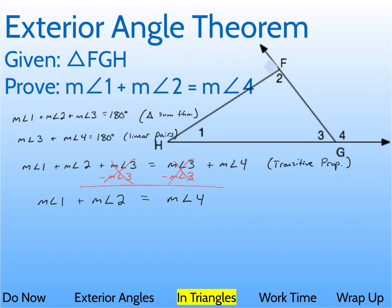Those cancel and look what we're left with. What we're left with is measure of angle 1 plus measure of angle 2 equals measure of angle 4, which is what we were trying to prove.